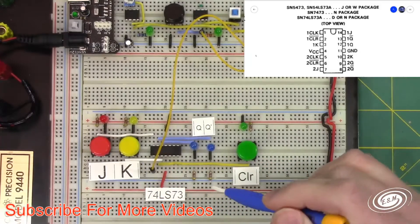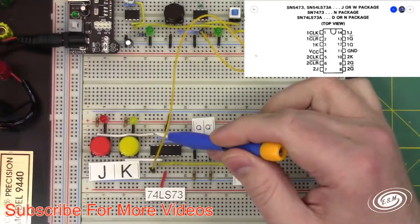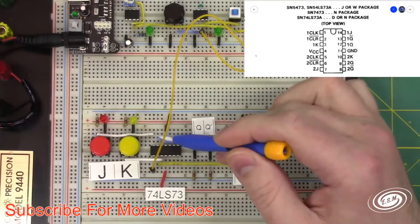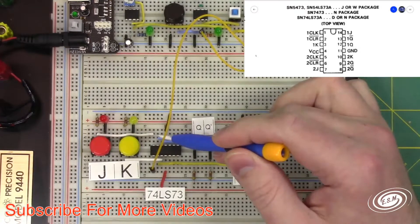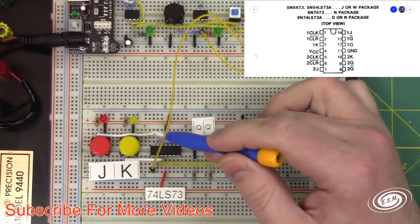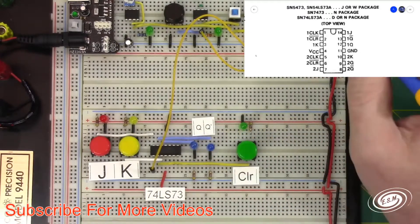J and K are active low. J comes to pin 1, and my Q naught is... pin 14 is J, Q naught is 13, and Q is 12.